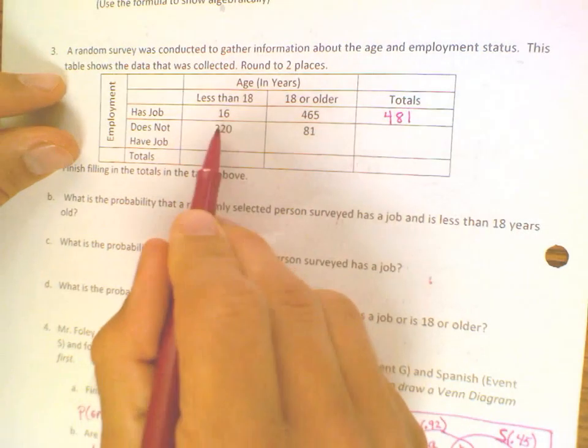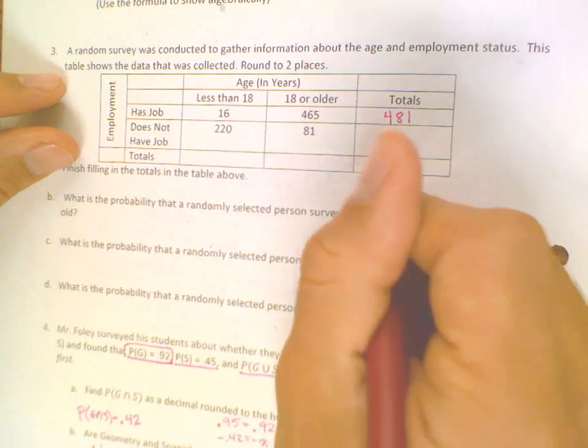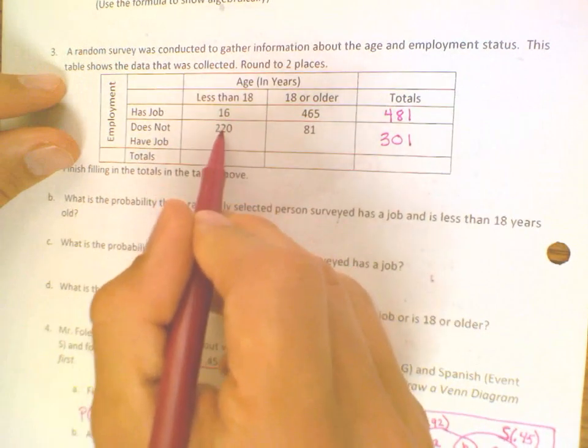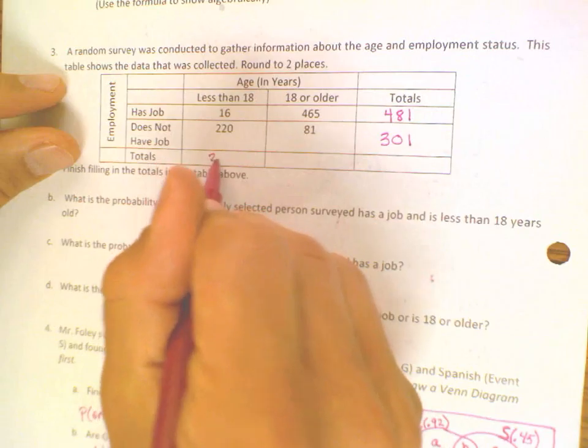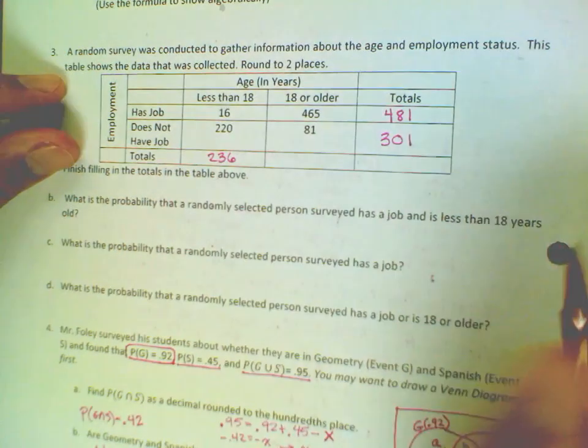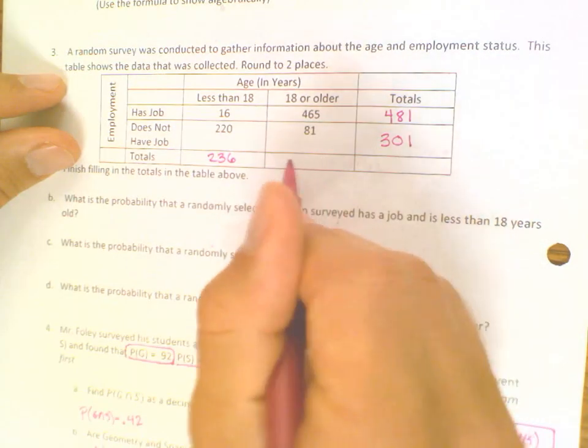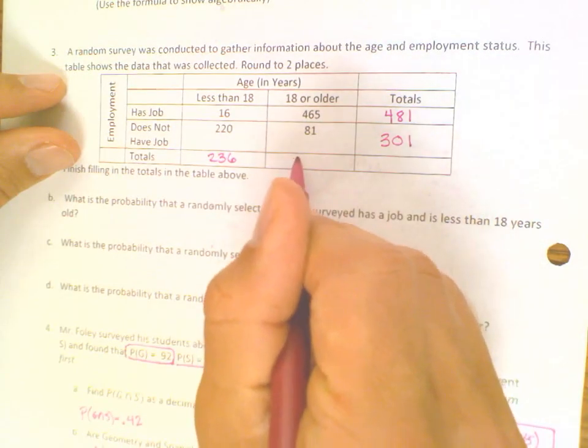We'll add 220 and 81, which is 301. We'll add 16 and 220, which is 236. And 465 with 81 is 546.